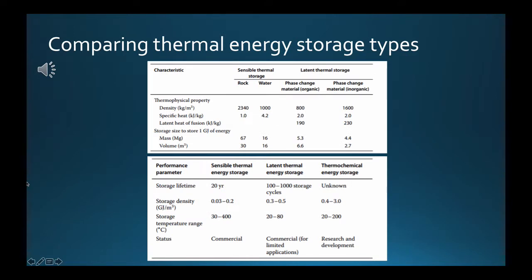Comparing thermal energy storage types: the storage masses and volumes needed exhibit significant variabilities. The storage having the lowest mass density requires a volume 15 times greater than the storage having the greatest mass density, while the storage having the lowest volumetric density needs a volume 11 times greater than the storage having the greatest volumetric density.